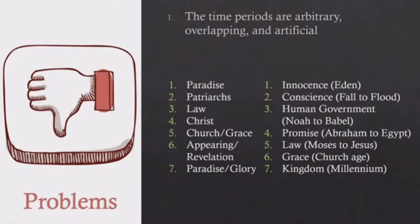On the classic formulation: you start with the period of paradise — the Garden of Eden — then the period of the patriarchs as a new dispensation, then the period of the law, then Christ gets his own dispensation — he's after the law and before the church. Then you have the church or grace. After Jesus comes back you have the appearing or revelation dispensation, during which the events of Revelation unfold. Finally, you end up back in paradise or glory. What I like is it recognizes that what God wanted in the beginning, he gets in the end — what we see in Genesis 1-2 we see in Revelation — the similarities are striking.